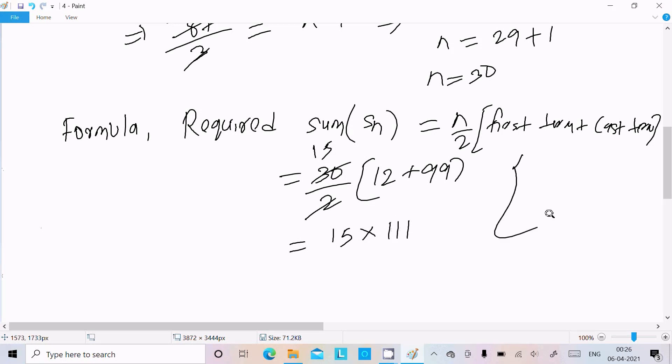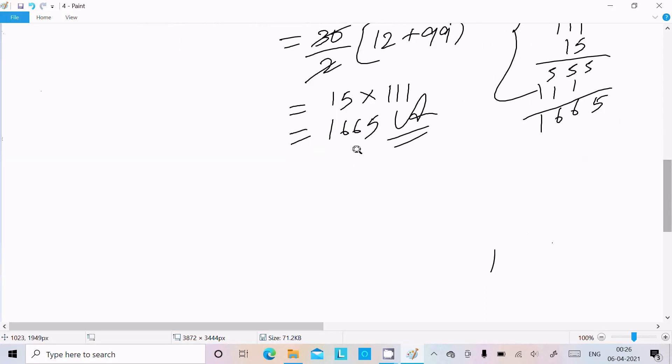So here 15 into 99 plus 12. This is now 111. So here 111 times 5. This is 5 now. So here 111. This is 5, 5 plus 1 is 6, 6, 1. So here 1665 is the correct answer. So required sum is 1665.